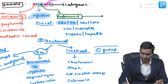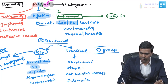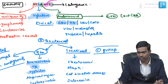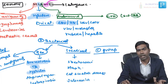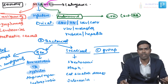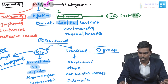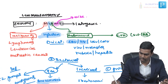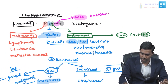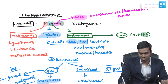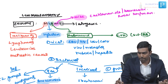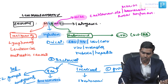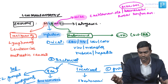For autoimmune causes, there are many autoimmune diseases that can cause lymphadenopathy — for example, connective tissue disorders like SLE, rheumatoid arthritis, and Sjögren's syndrome. In fact, the most common extra-articular manifestation of rheumatoid arthritis is lymphadenopathy. Under miscellaneous, you can include Castleman disease, Kawasaki disease, Rosai-Dorfman disease, and Kikuchi-Fujimoto disease.